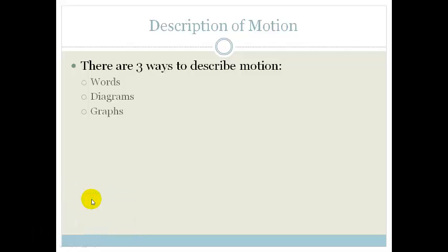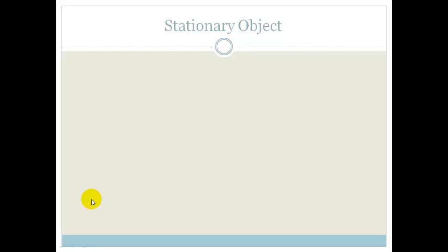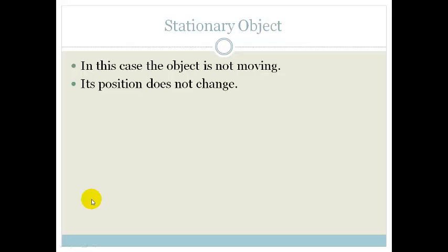You also need to be able to convert between them and understand and analyze. Let's start with the stationary object. In this case the object's not moving, the position does not change, the velocity is zero, the acceleration is zero.